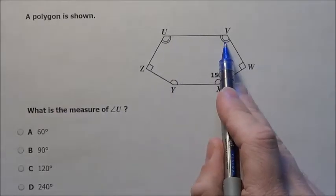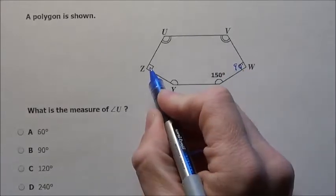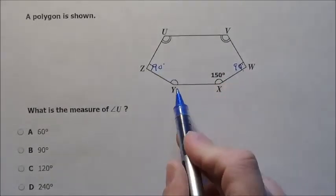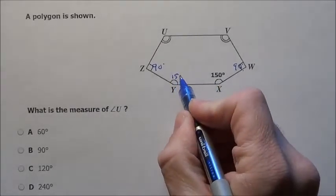Now notice U and V are the exact same. It tells us W is a 90 degree angle. It tells us Z is 90 degrees. It says Y and X by that marking tells us they're the same, so this is 150.